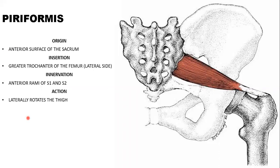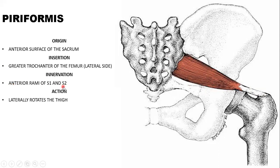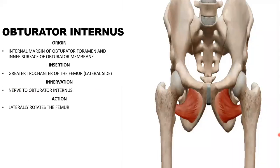The piriformis originates from the anterior surface of the sacrum. It passes through the greater sciatic notch and inserts on the greater trochanter of the femur on the lateral side. Innervation is via the anterior rami of S1 and S2. Its action is lateral rotation of the thigh.